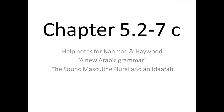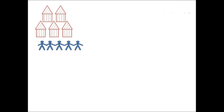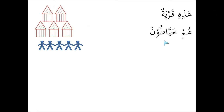Let's take an example sentence: هذه قرية — This is a village. So there are the houses in this small village. Hum Khayyatun — These are tailors. They live in this village.